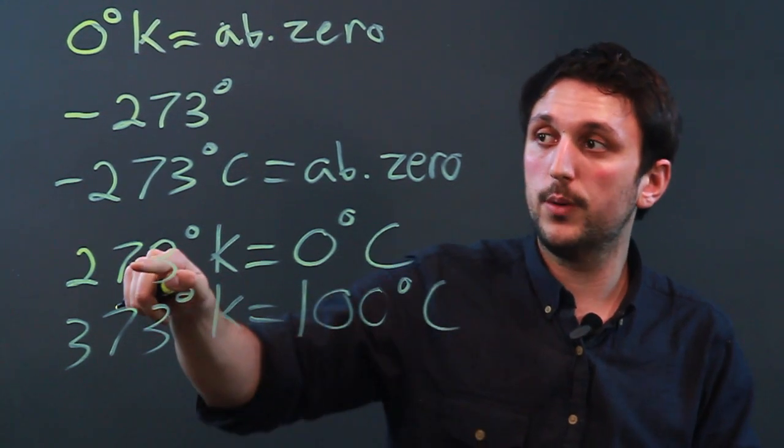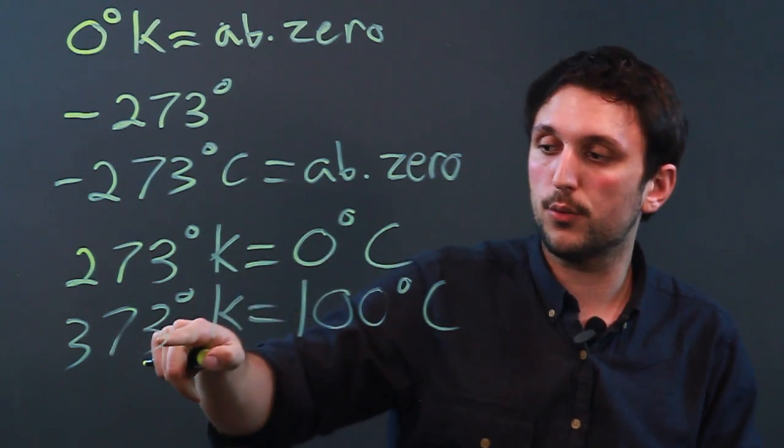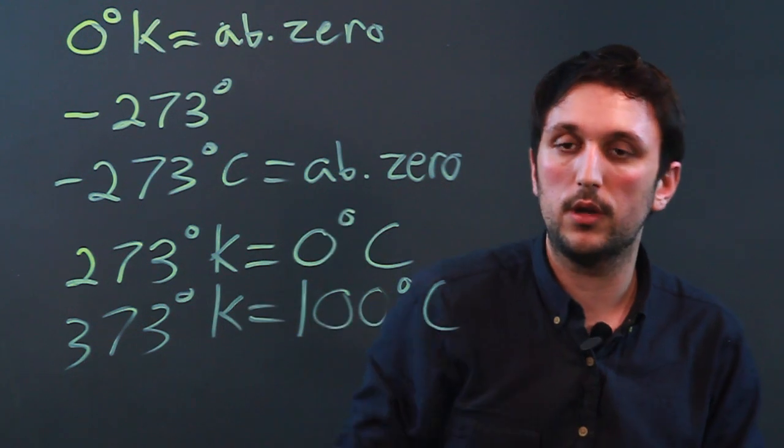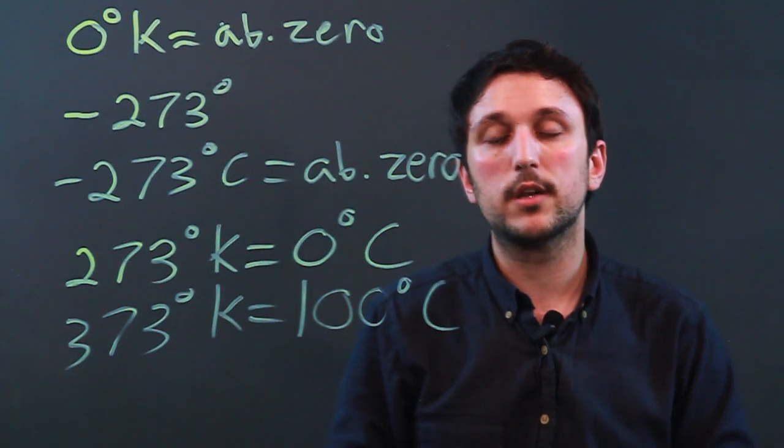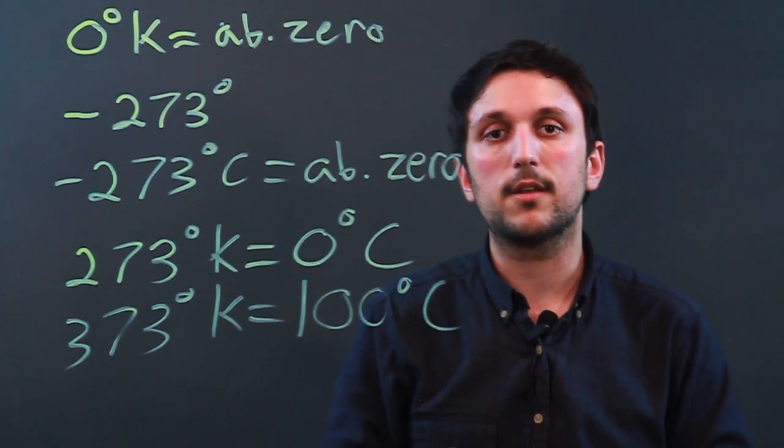All we're doing is subtracting 273. 373 minus 273 equals 100. I'm Charlie Kesov and you just learned the right way to convert Kelvin into Celsius. Thanks a lot.